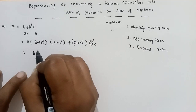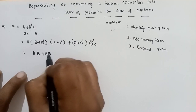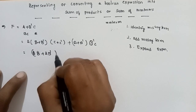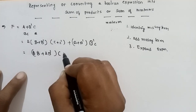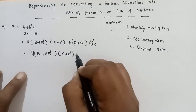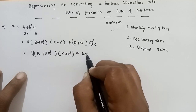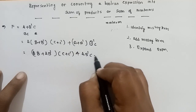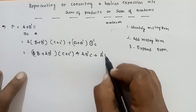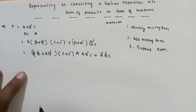A, A, B into A, B dash, C plus C dash plus A, B dash, C plus A dash, B dash, C.